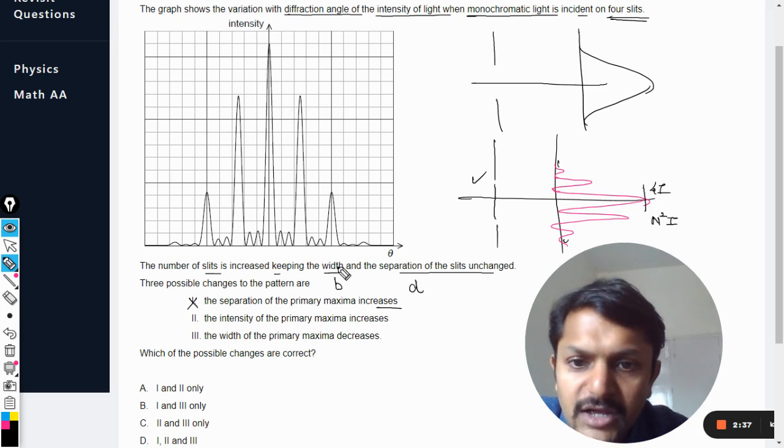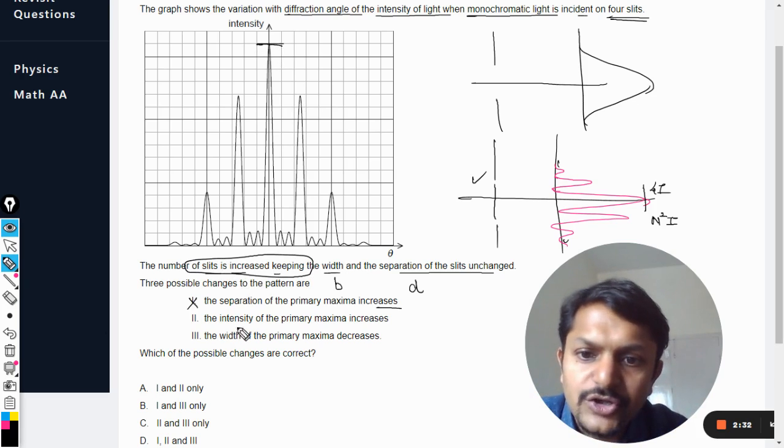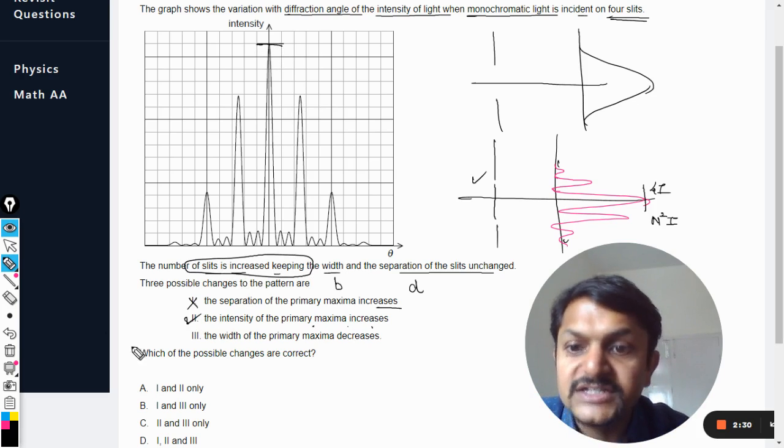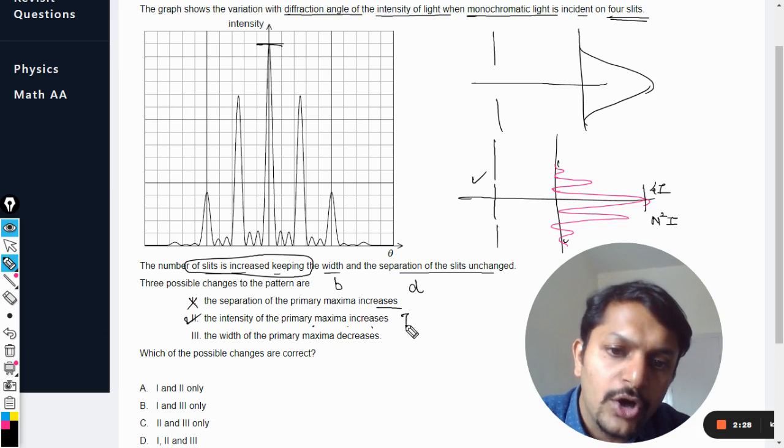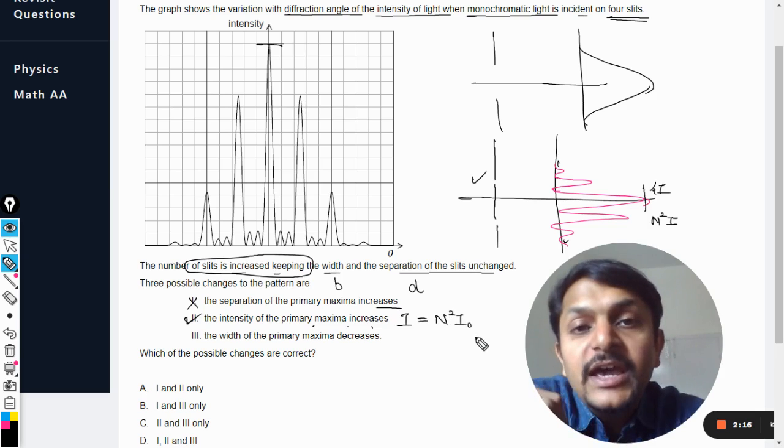Accordingly, now they have increased the number of slits, so the intensity has definitely increased. So the intensity of the primary maxima increases, definitely increases, because the intensity of the primary maxima or you can call it I is directly proportional to n square, or it is equal to I₀n square.